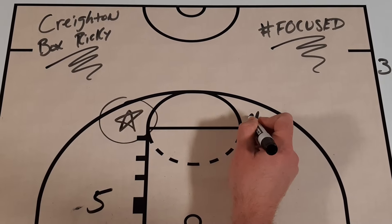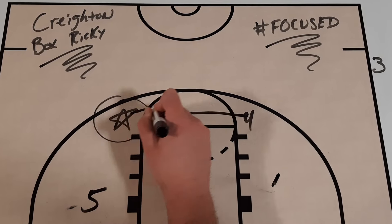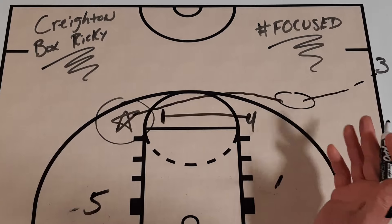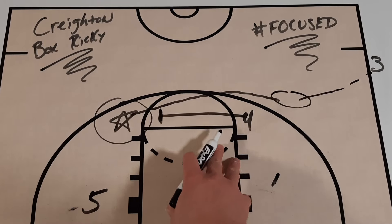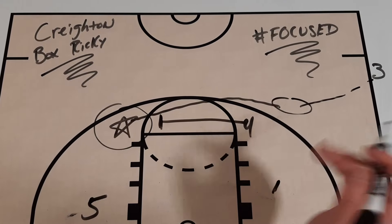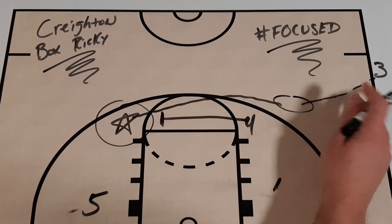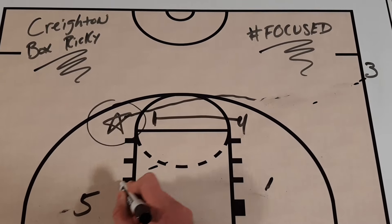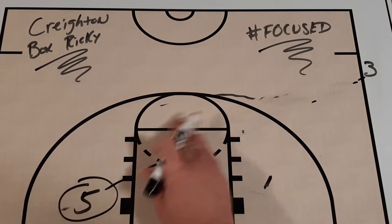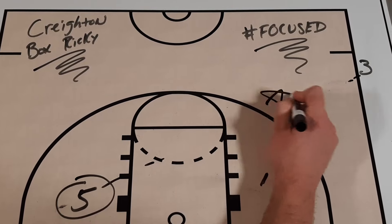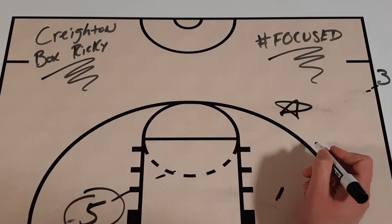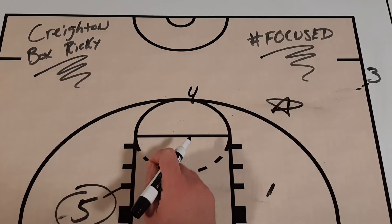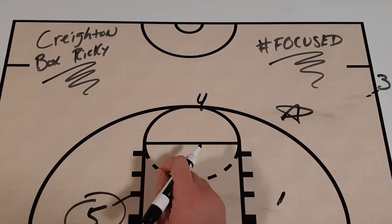We're also going to get a screen from four to our star player. Now you could get an open shot off of that screen — it's possible — but that's not the primary look in this action. If it's there, great, they'll take it. But instead we're going to get a pass from the three player on the sideline out-of-bounds set over to five. Our star player has just gotten a screen from four.